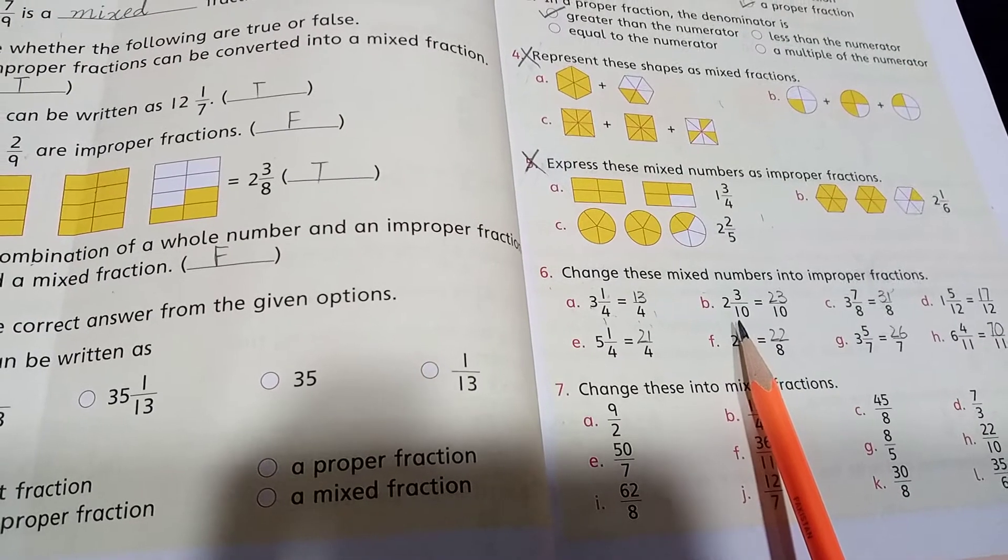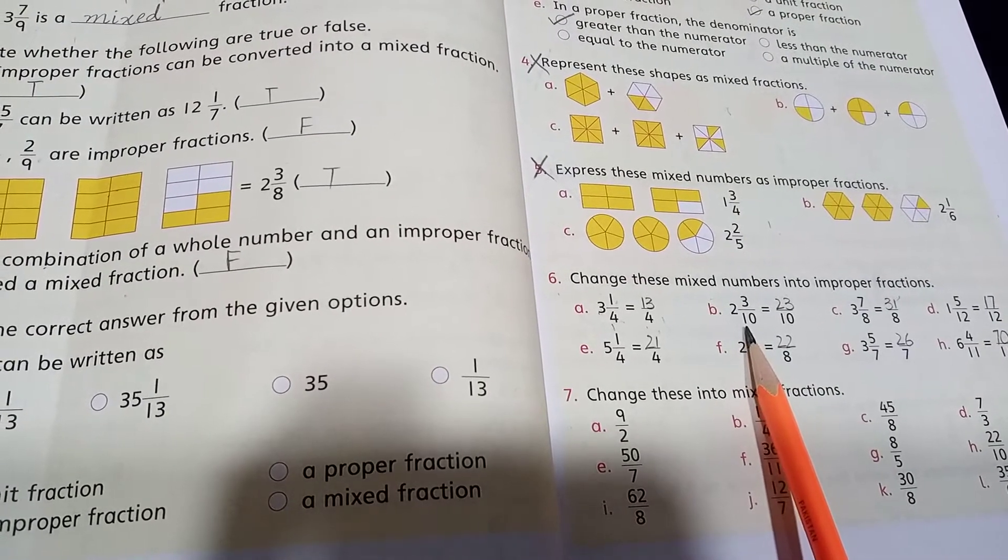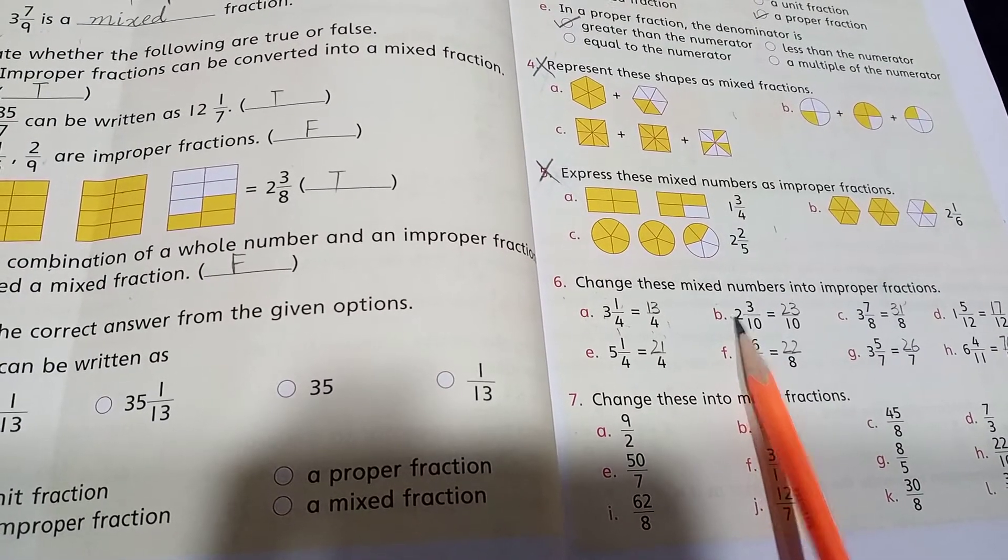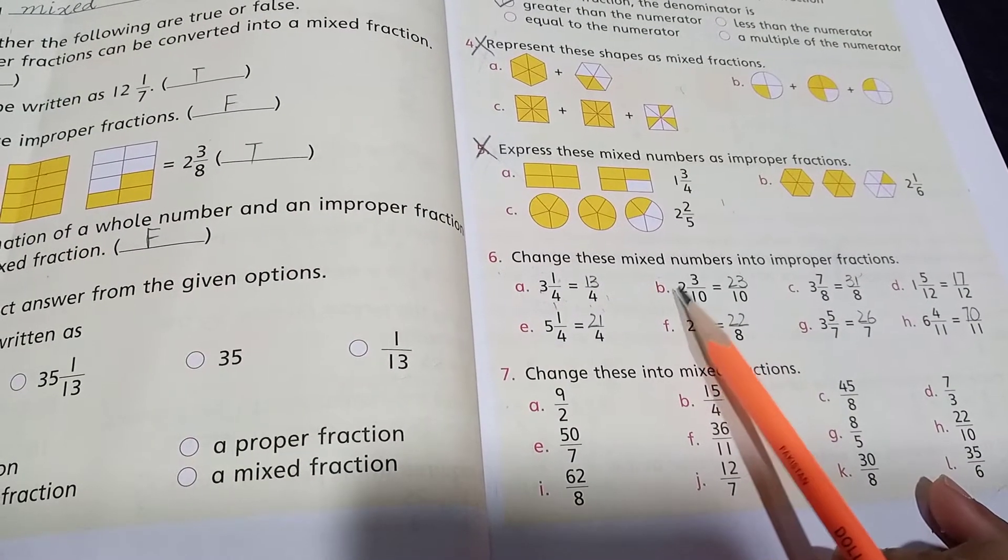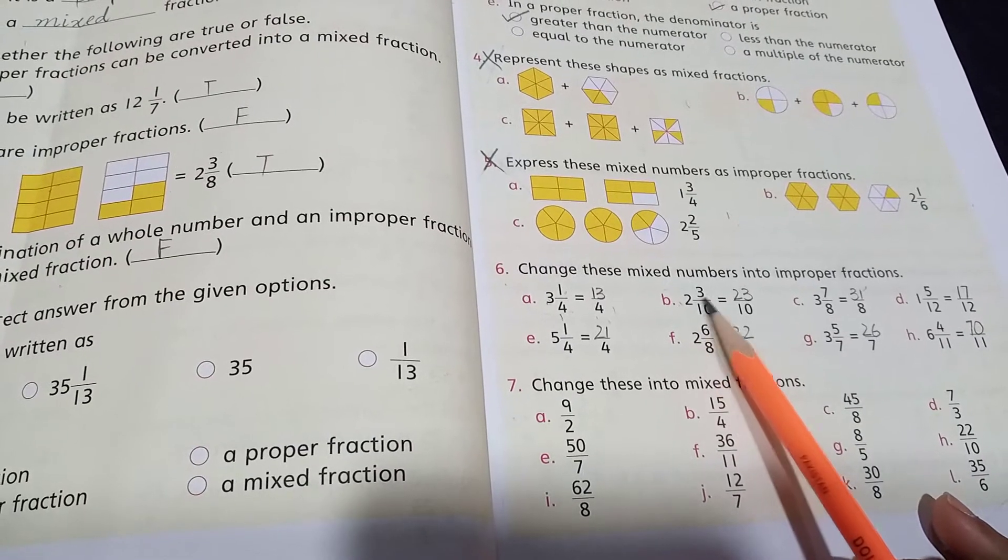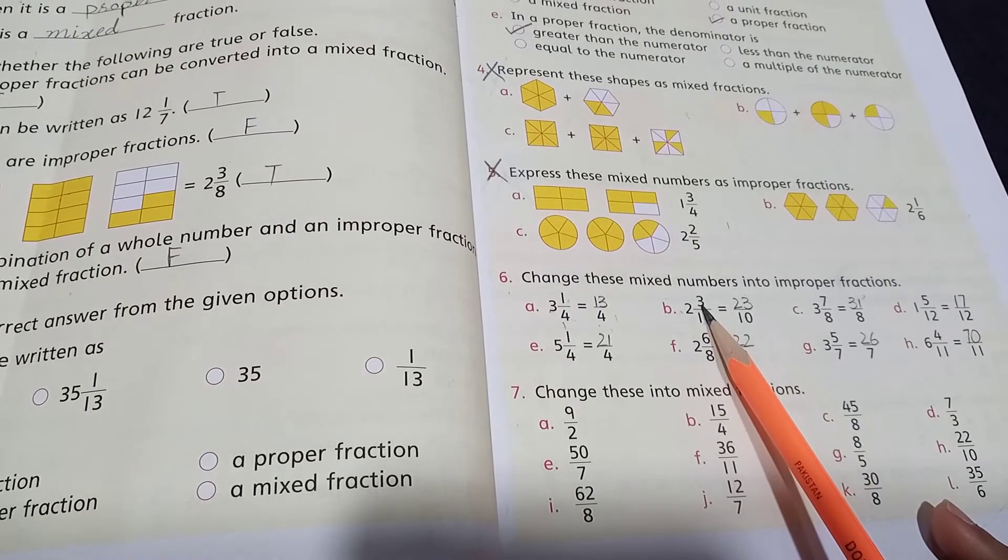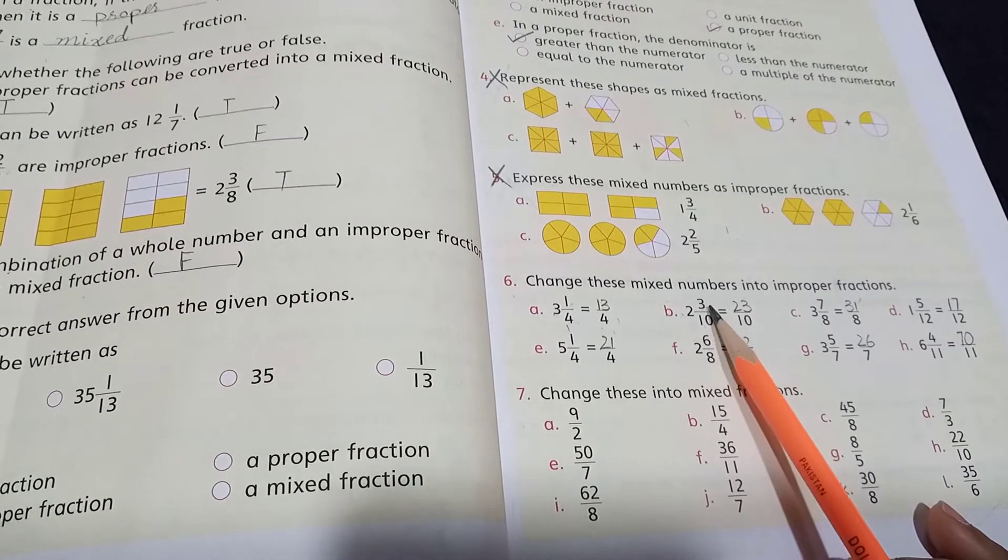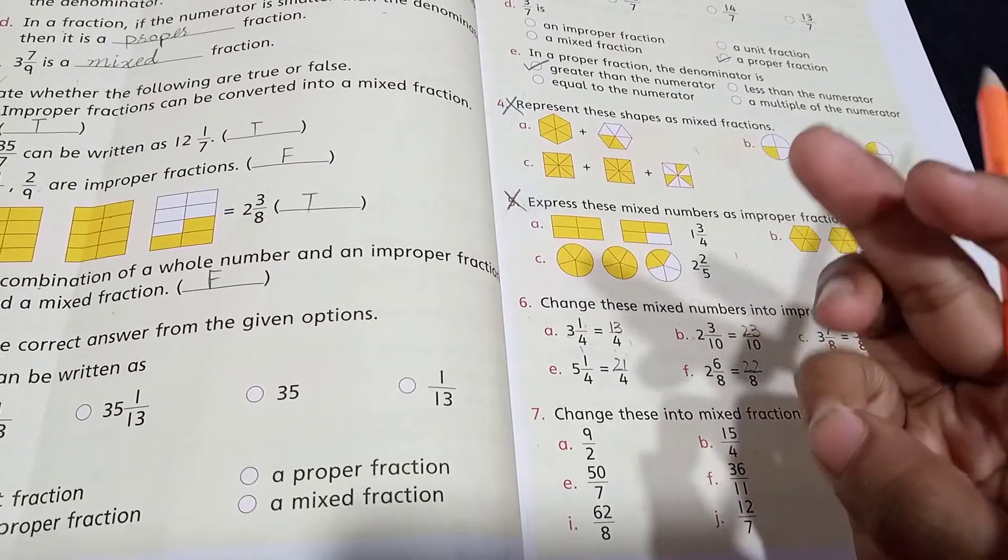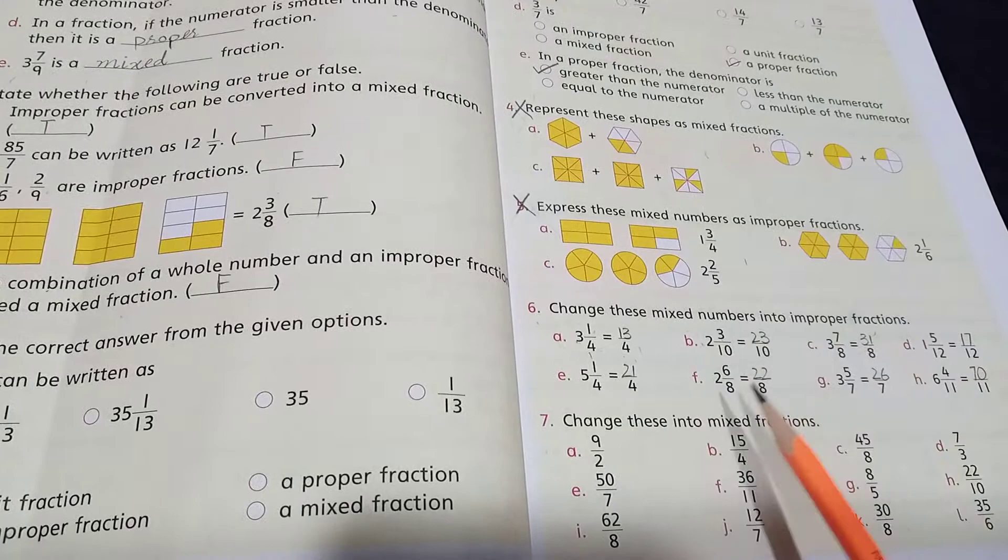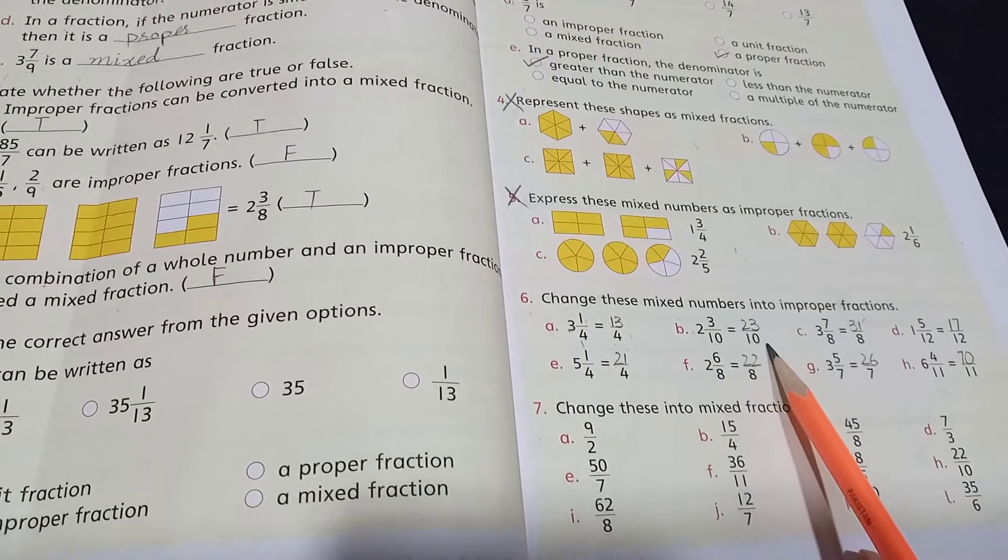Now the b part. First of all we will multiply the denominator of proper fraction with the whole number. 10 times 2 are 20. Then we will add numerator of the proper fraction. 20, 21, 22, 23. So the answer is 23 by 10.